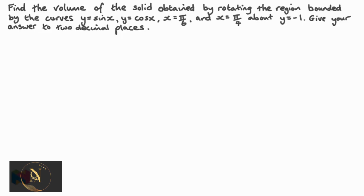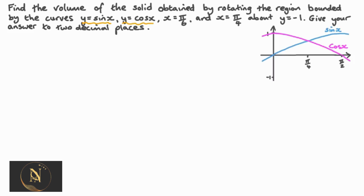Find the volume of the solid obtained by rotating the region bounded by the curves y equals sine x, y equals cosine x, x equals pi by 6, and x equals pi by 4, about y equals negative 1. Give your answer to two decimal places. The functions y equals sine x and y equals cosine x form the boundaries of a region, also bounded by x equals pi by 6 and x equals pi by 4, and we rotate about y equals negative 1.